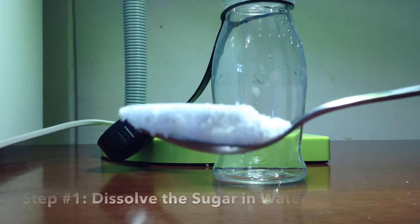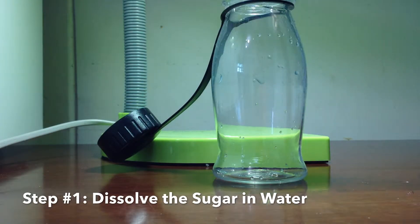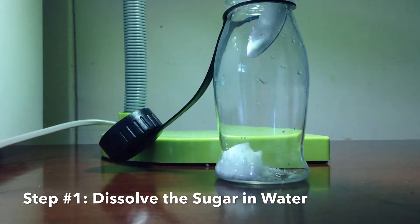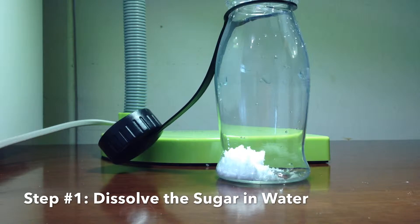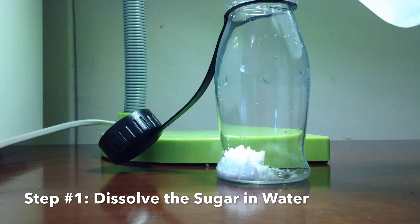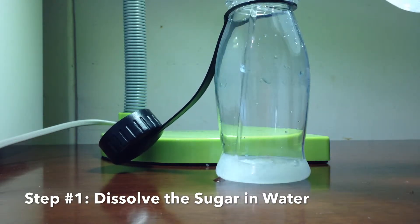Place about a teaspoon of fructose or glucose into a clean empty plastic bottle. Then add about 50 to 75 ml of clean tap water.